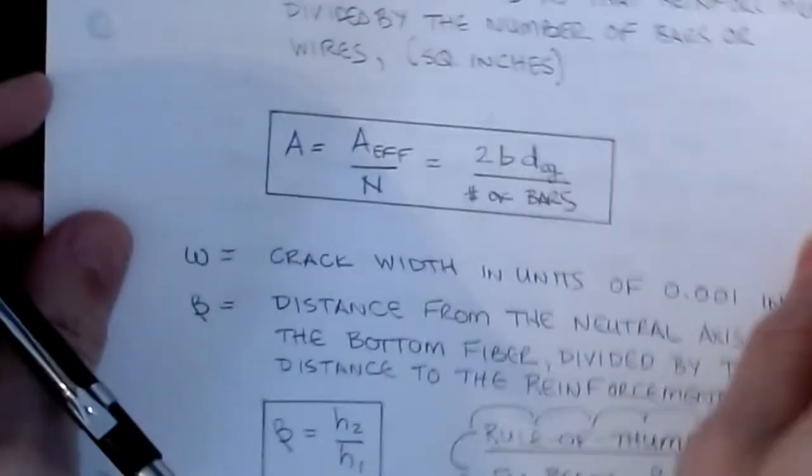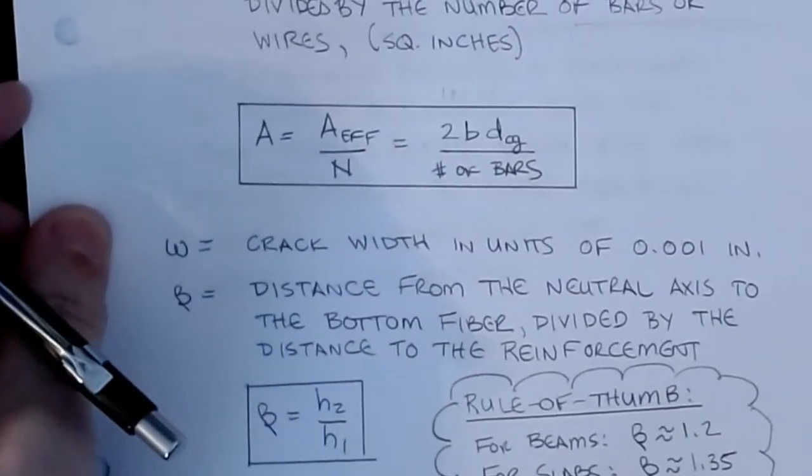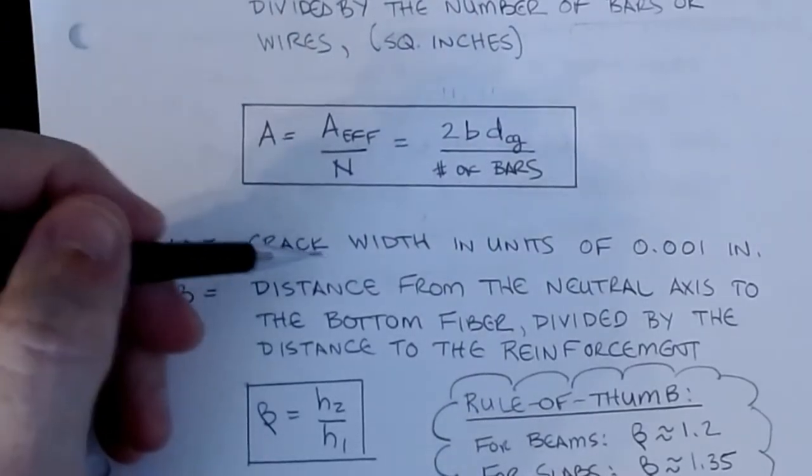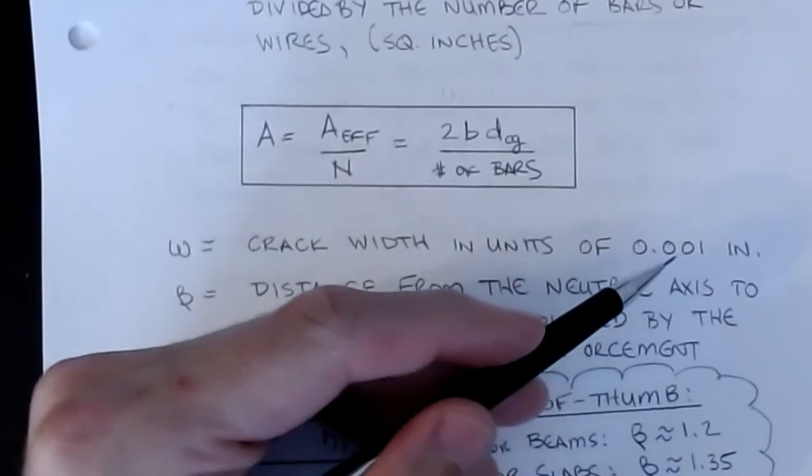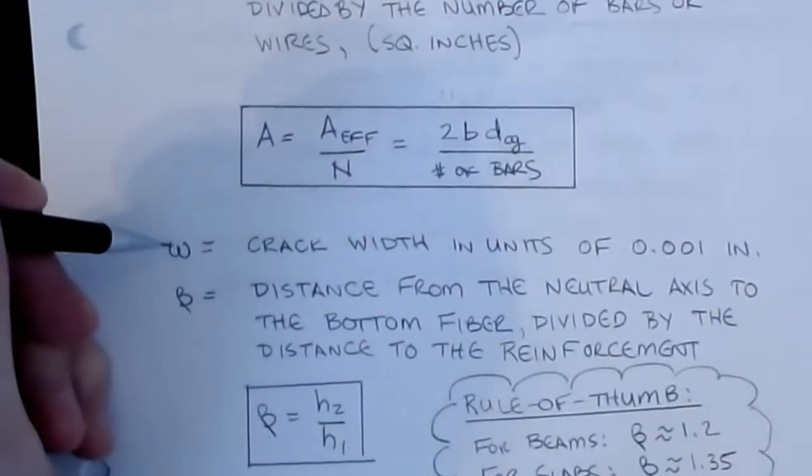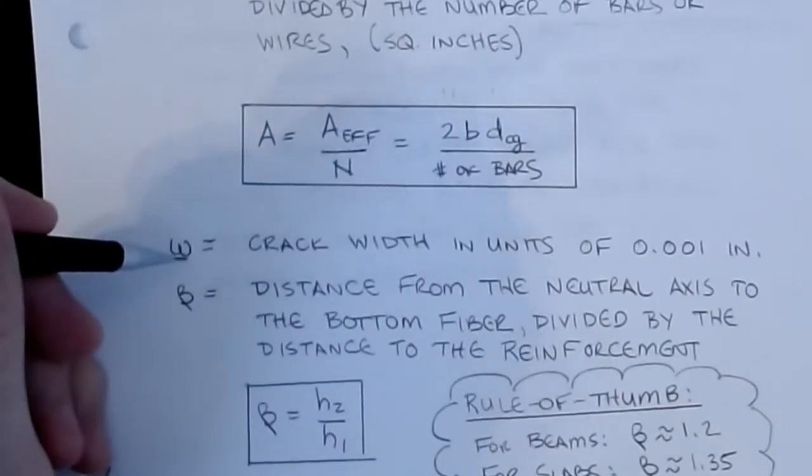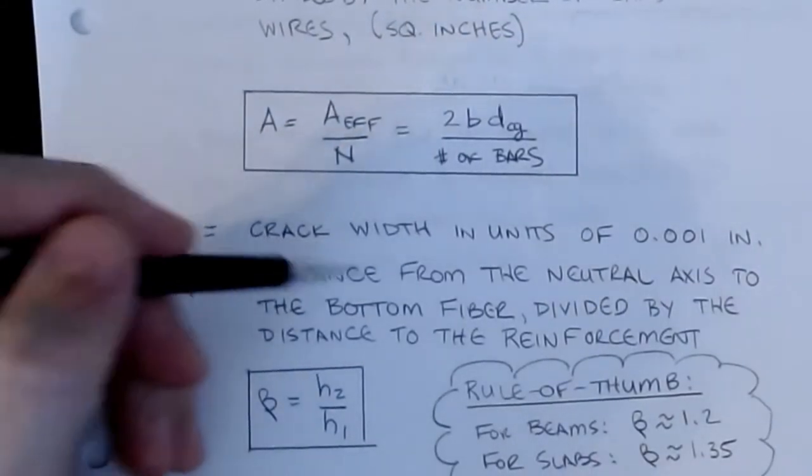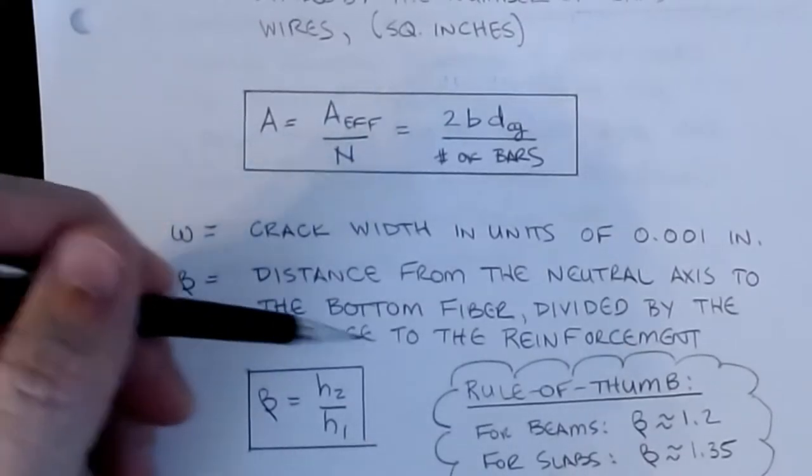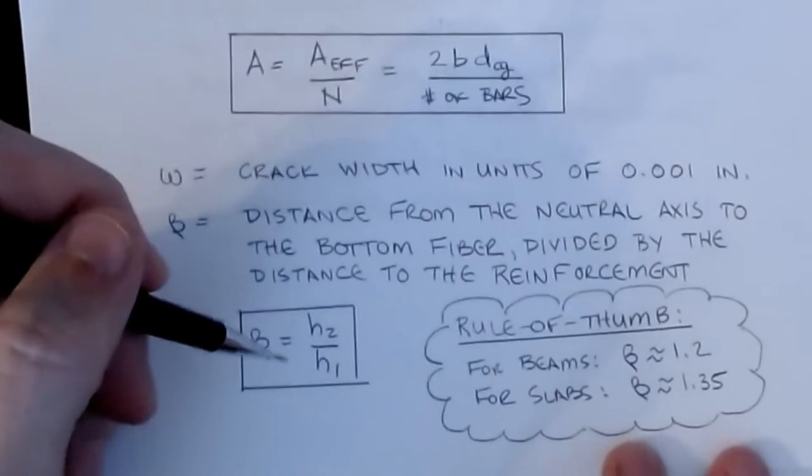The W that we're calculating out of the Frosch equation and the Gergely-Lutz equation then is basically the estimated crack width in units of 0.001 inches, thousandths of an inch. We're looking at very small numbers, this number will be something typically on the order of like 100 or 200 will be the parameter that we're getting here. And then the beta is the distance from the neutral axis to the bottom fiber divided by the distance to the reinforcement, so this is where those H2 and H1 parameters are going to come in.